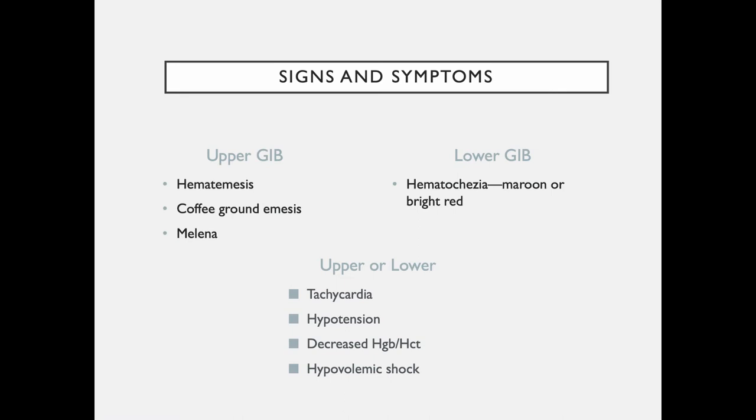Signs and symptoms of GI bleeds: upper GI bleeds present with hematemesis — heme meaning blood, emesis meaning vomitus — coffee ground emesis, and melena, which is the dark tarry stool from blood being digested as it passes through the GI tract. Lower GI bleeds tend to present with brighter blood, called hematochezia. With any GI bleed, as the patient becomes anemic they become tachycardic and hypotensive, and can potentially go into hypovolemic shock.